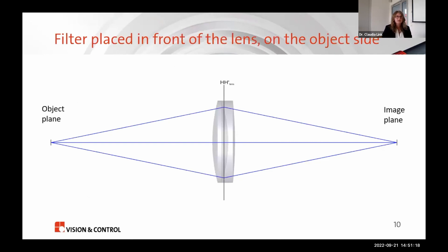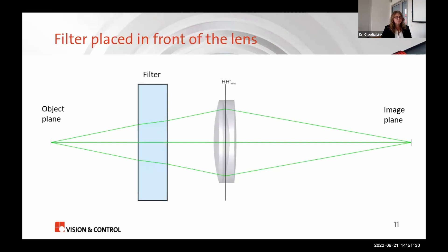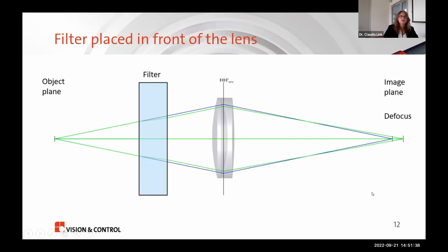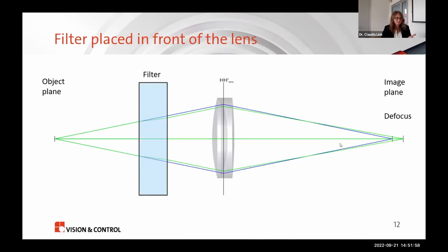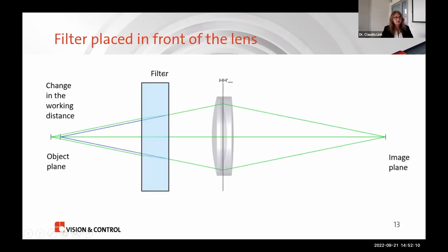What happens if a filter is placed in front of your lens? We get a defocus, and since the back focal length of the camera is fixed, we have to move to a new working distance. So there is a change in working distance when a filter is placed in front of the lens. Using the formula, you can calculate the new working distance: you start with the design working distance, add the shift due to the glass length, then subtract the mechanical length. For example, with a working distance of 160 mm, you get about 157 mm as a result.